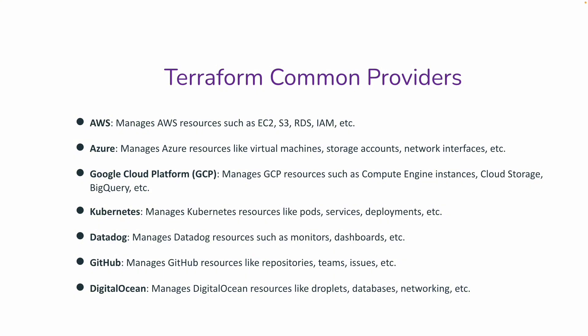Terraform common providers include AWS, Azure, Google Cloud Platform, Kubernetes, Datadog, GitHub, and DigitalOcean. For AWS, resources include EC2 instances, S3 buckets, Relational Database Service, Identity Access Manager, AWS Lightsail instances for WordPress blogs, VPC, IAM roles, S3 buckets, and more.